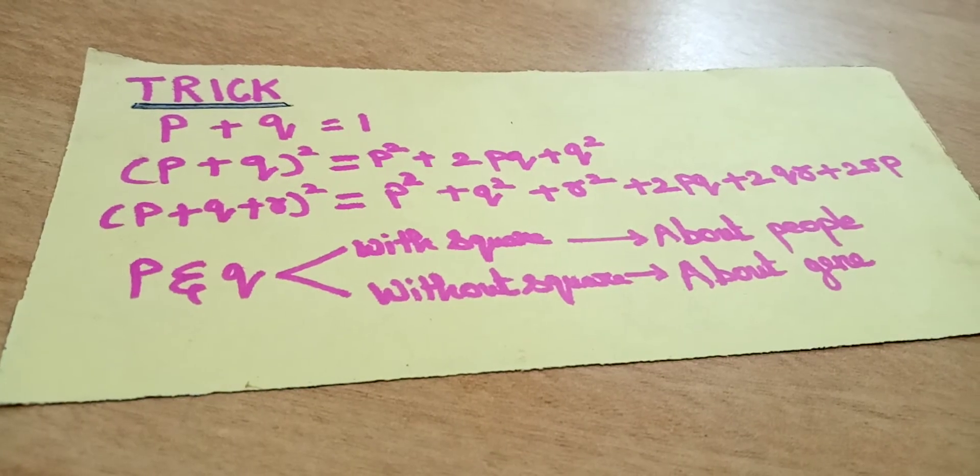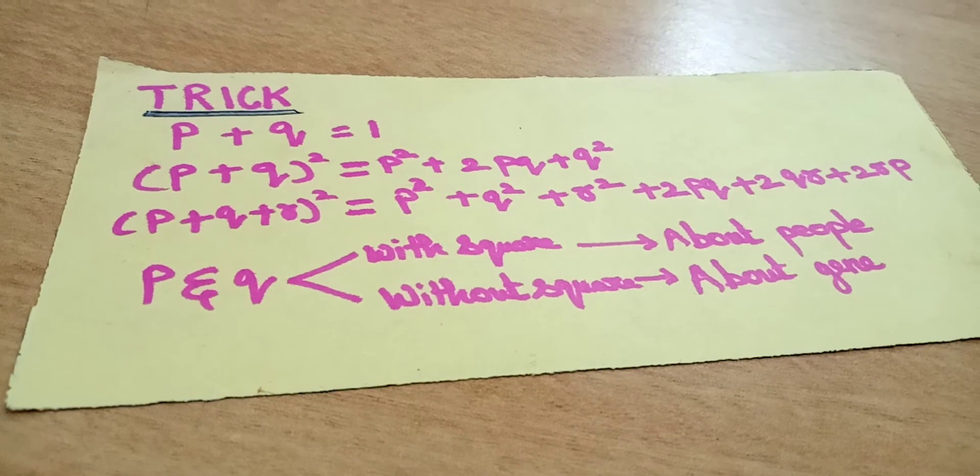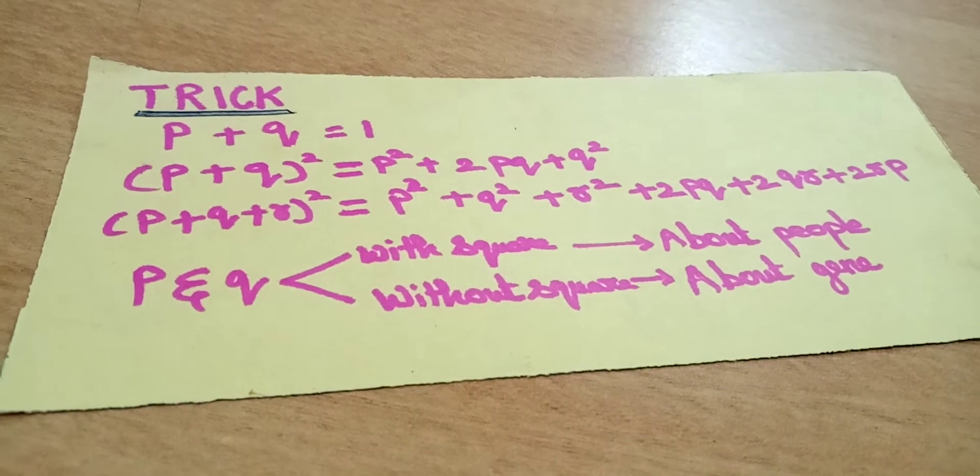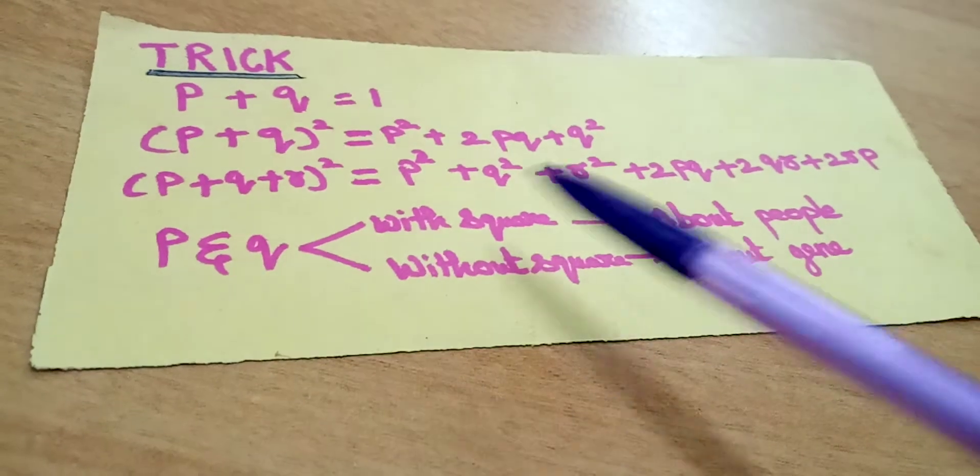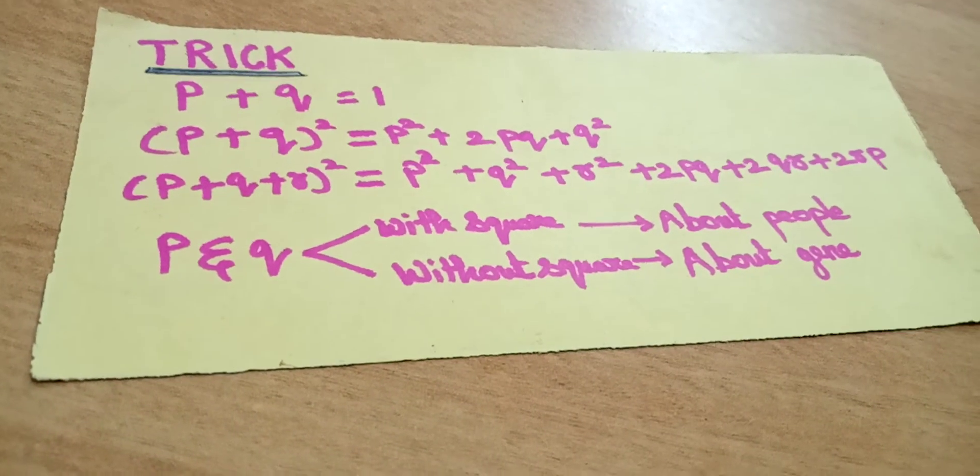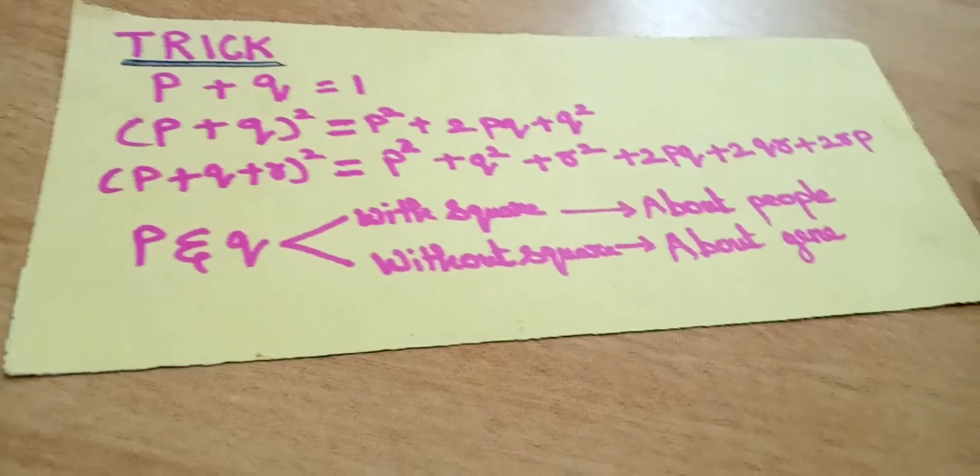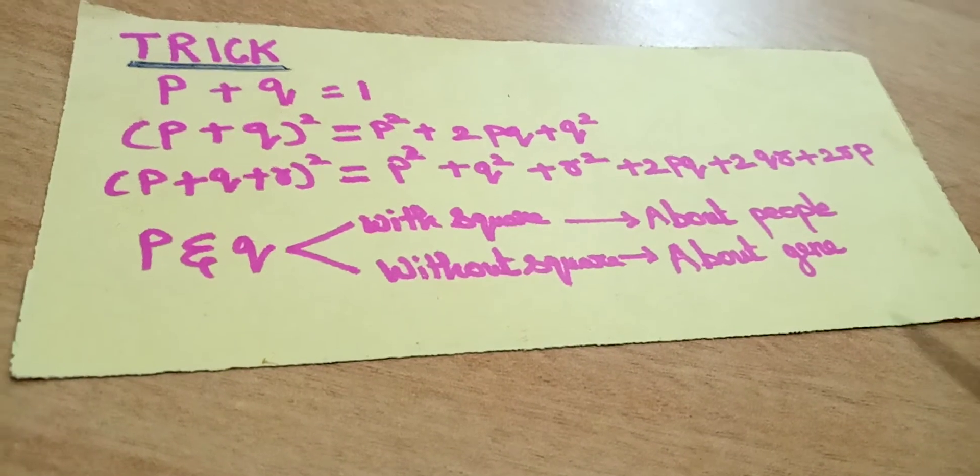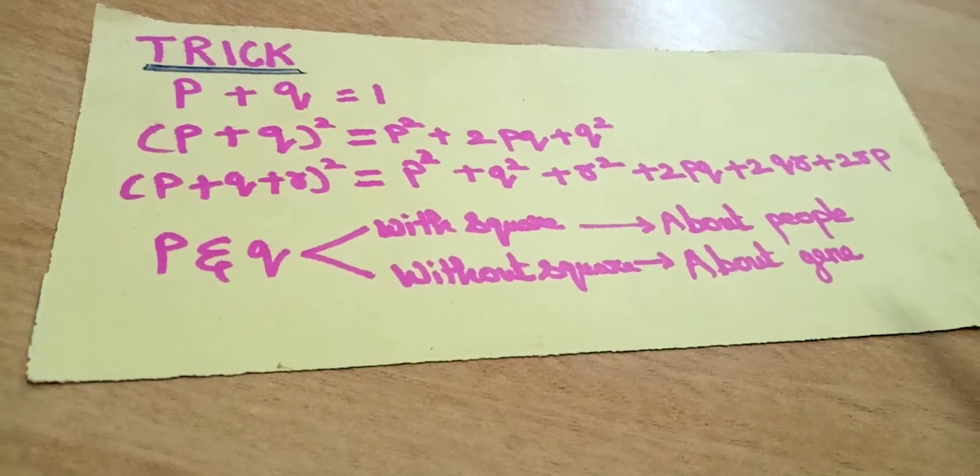And here comes the main trick which confuses us: whether to take P with square or without square. See, when they are asking about the people, how many people are affected, we must take P with square. If they are asking about gene, if they are saying anything about the gene, we should take without square, only P.